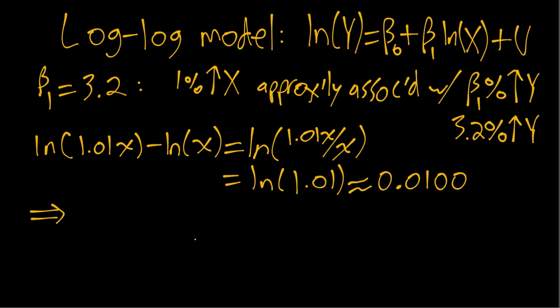So what this implies is that the 1% increase in x gives us a change of beta 1 times 0.0100, which using our example of beta equals 3.2 would be 0.032.